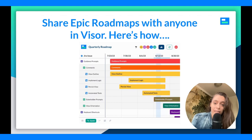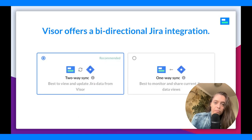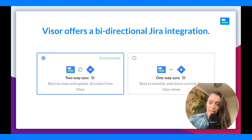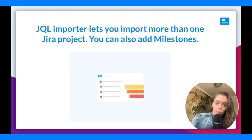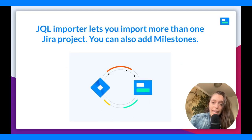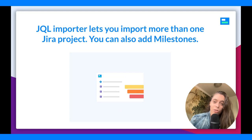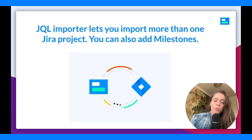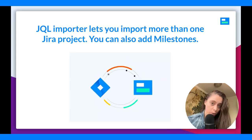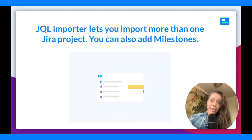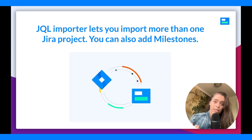You can share Epic Roadmaps with anyone in Visor, even people who don't access Jira, because we offer a bidirectional Jira integration. We have both a two-way sync and a one-way sync with Jira. The one-way sync lets you visualize your data; the two-way sync lets you visualize it and push changes back to Jira. We also have a JQL importer, which lets you import more than one Jira project — crucial when talking about Epic Roadmaps. You can also add milestones, which is not a feature available in either of Jira's built-in roadmap options.